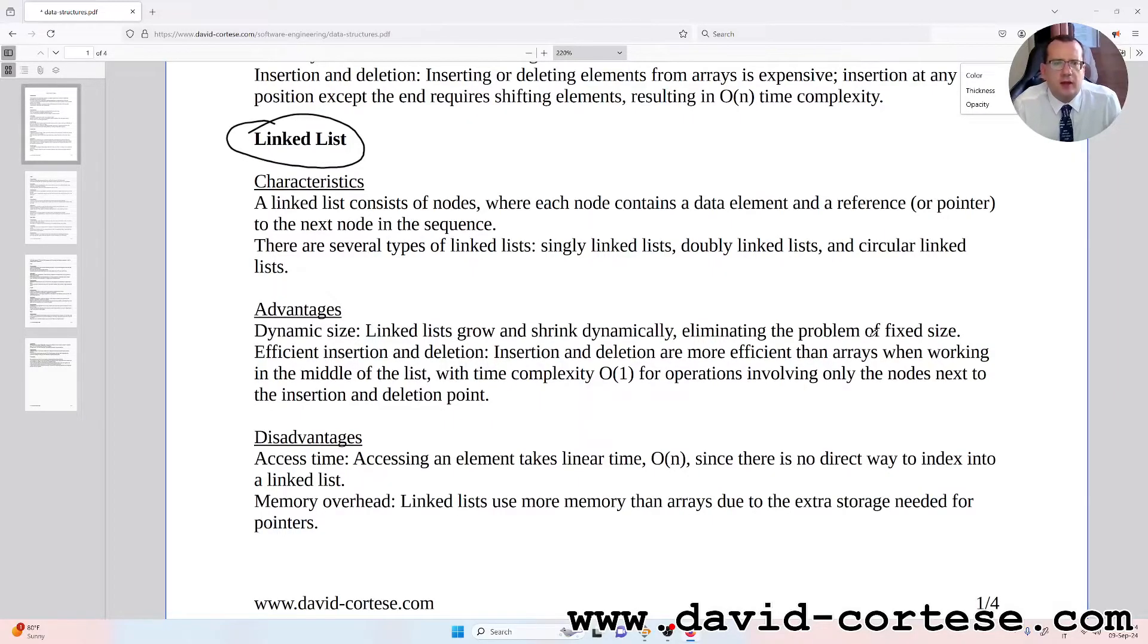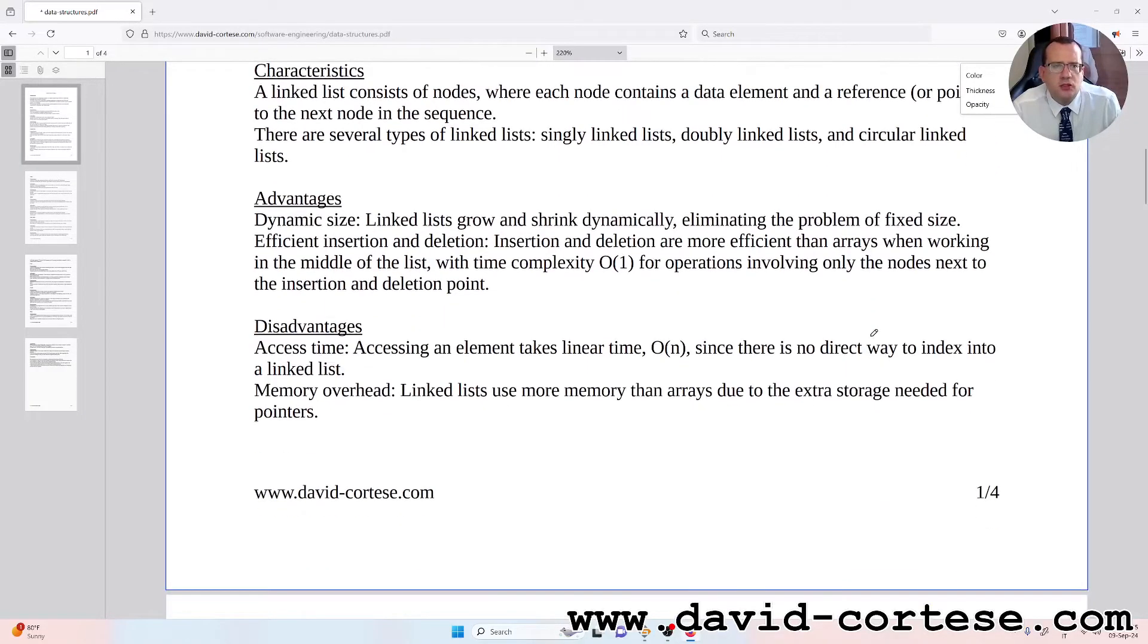There are several types of linked lists: singly linked list, doubly linked list, and circular linked list. Advantages: dynamic size. Linked lists grow and shrink dynamically, eliminating the problem of fixed size. Efficient insertion and deletion: insertion and deletion are more efficient than arrays when working in the middle of the list.